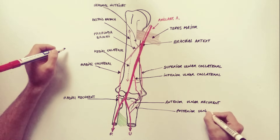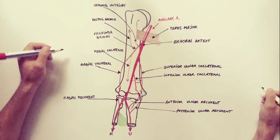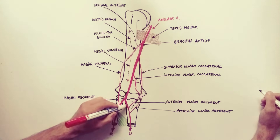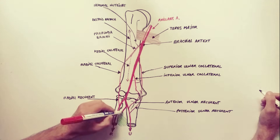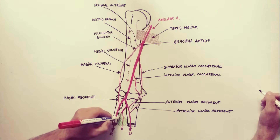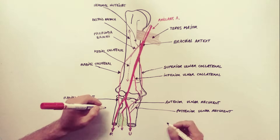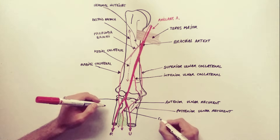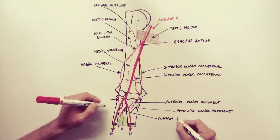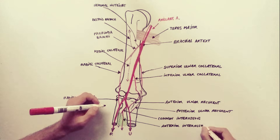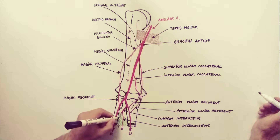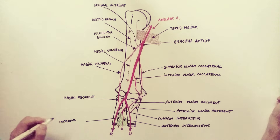The common interosseous artery also arises from the ulnar artery. It splits into two arteries: the anterior interosseous artery, which descends on the anterior surface of the interosseous membrane, and the posterior interosseous artery, which descends on the posterior surface.